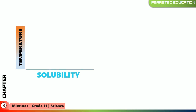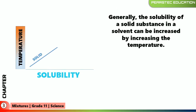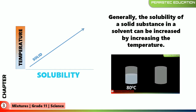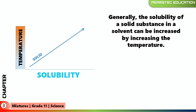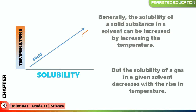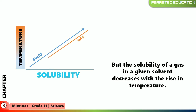Generally, the solubility of a solid substance in a solvent increases with increasing temperature — we already learned that. We saw that at 80 degrees Celsius versus 25 degrees Celsius, more sugar dissolves in water at higher temperature. But the solubility of a gas in a given solvent decreases with the rise in temperature. It is the very opposite — when temperature rises, gas solubility goes the other way.